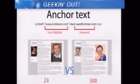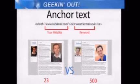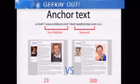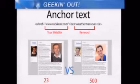Here's a practical example. Wait a second, I know that guy — I know both of those guys. So in this example, we're using 'best weatherman ever.' If you want to be found under that particular keyword, you create your anchor text first. Your goal is to place this on other websites. If you have 500 of these and I have 23, you will be ranked higher in Google because you have more anchor texts on the Internet. You want 'best weatherman ever' to show up in as many places around the Internet as possible.